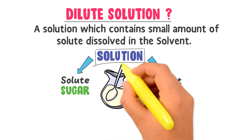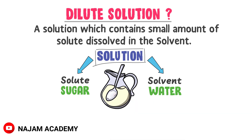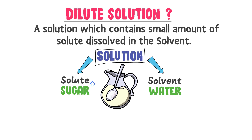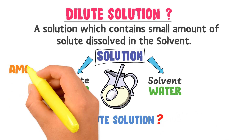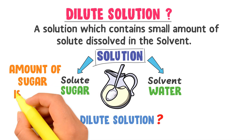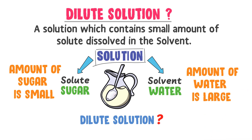For example, when you dissolve one tablespoon of sugar in a large amount of water, you get a Dilute Solution. It is a Dilute Solution because the amount or concentration of sugar is small and the amount or concentration of water is large.